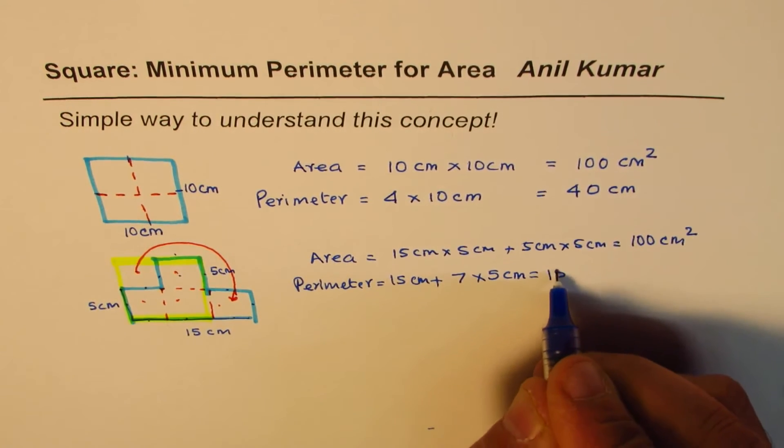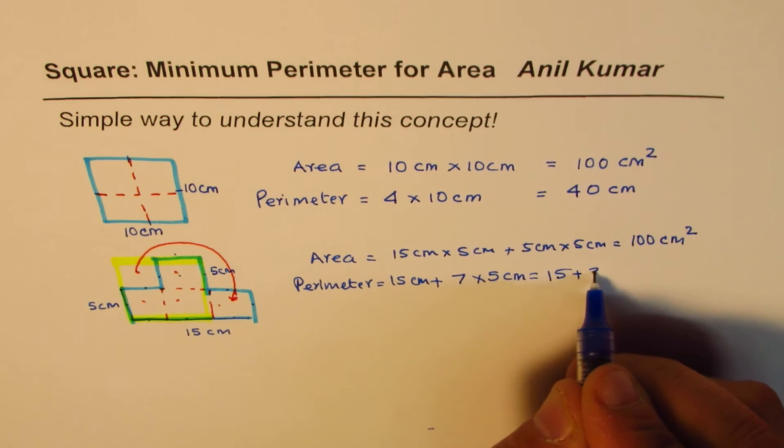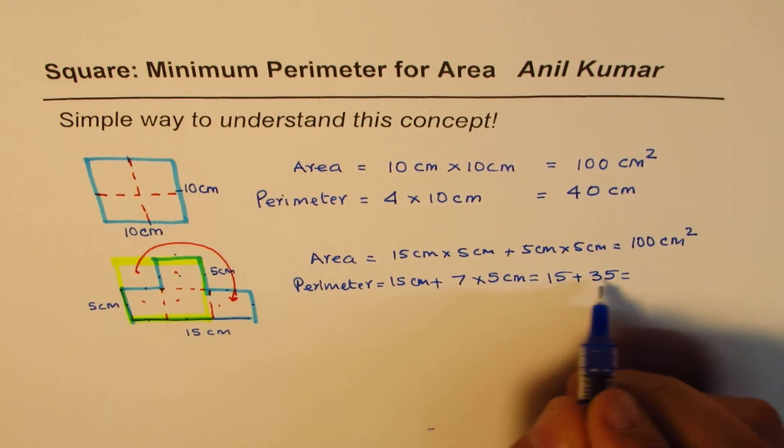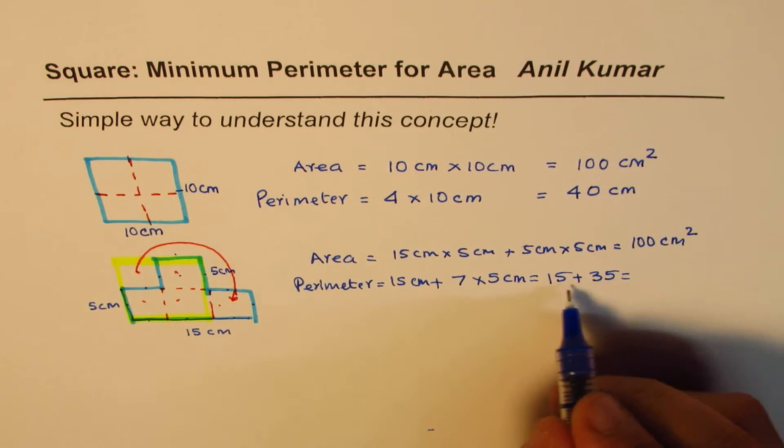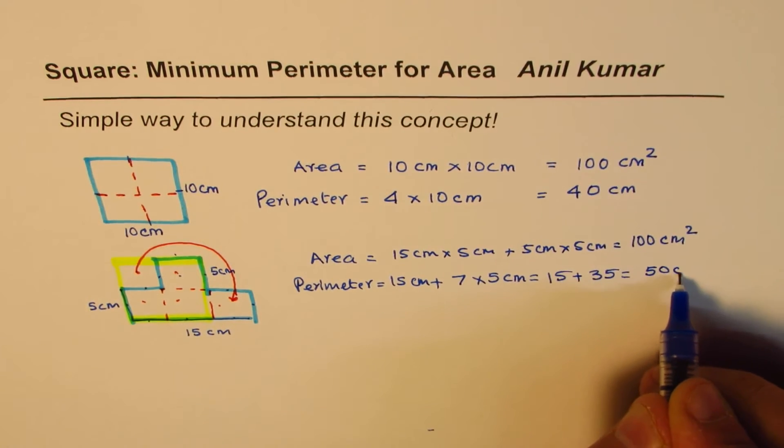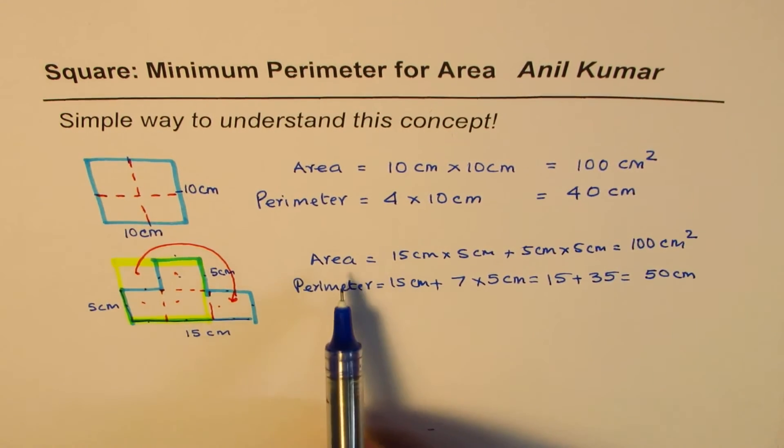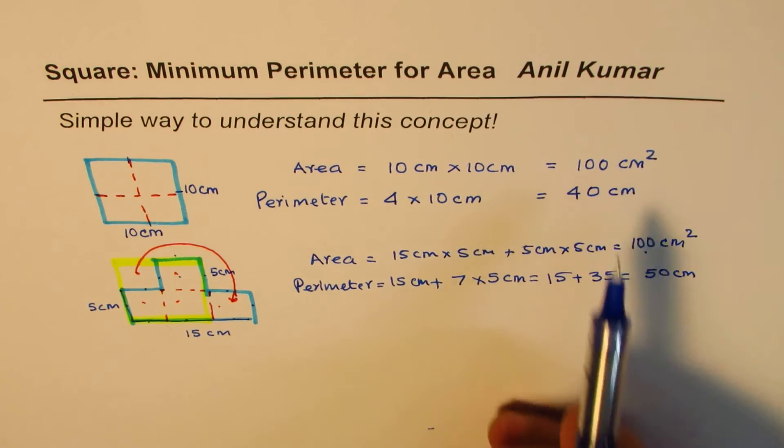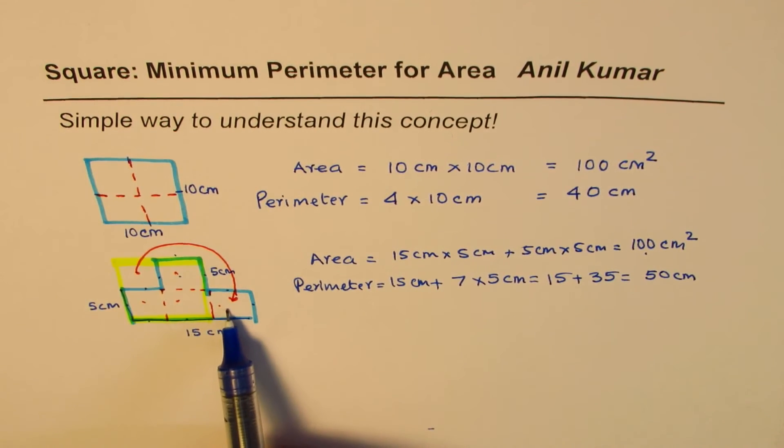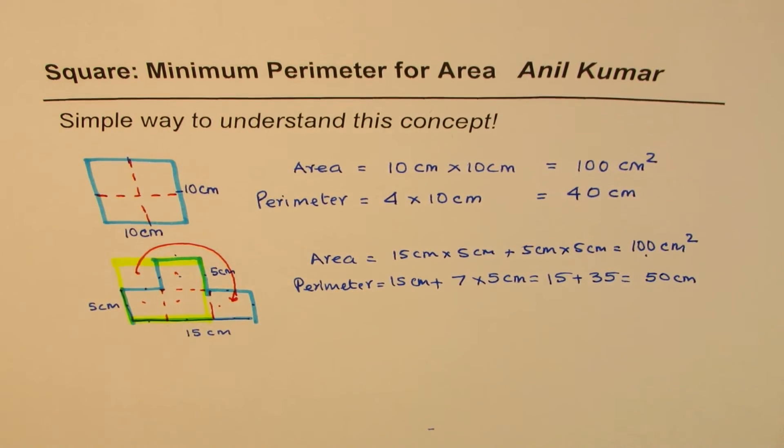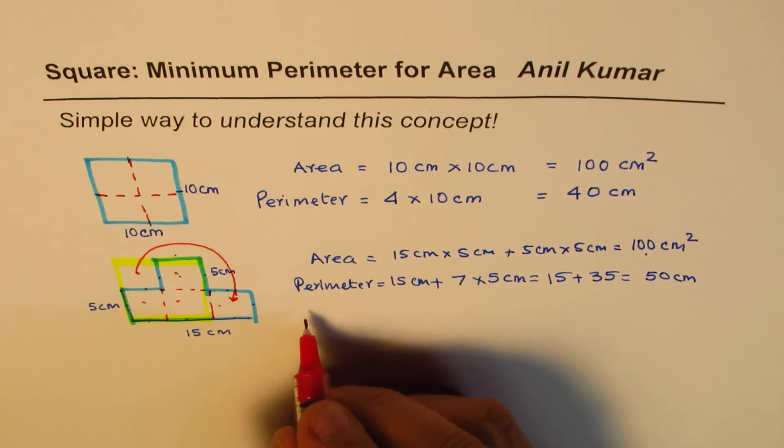Which is 15 plus 35, so 15 plus 35 is 50. So what do you see is that for the same area, area is hundred, right? Perimeter is larger, right? Therefore what we notice here is that square...